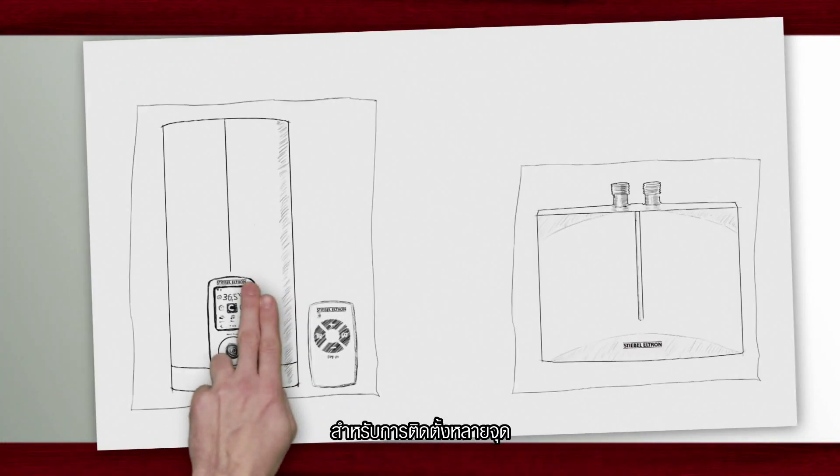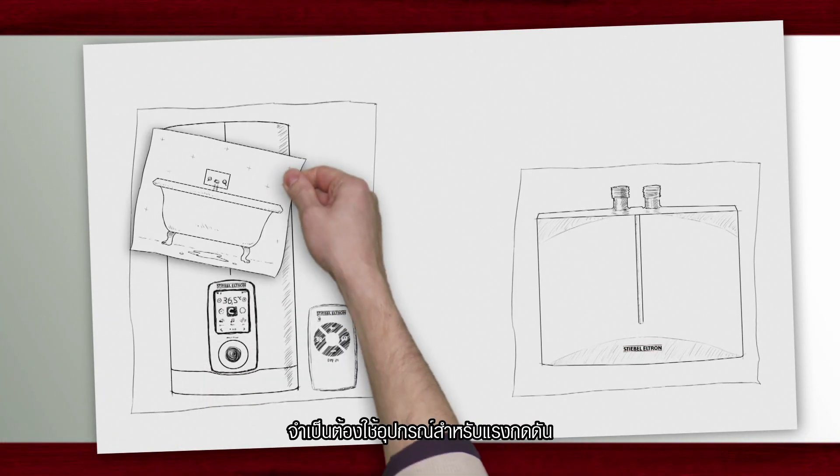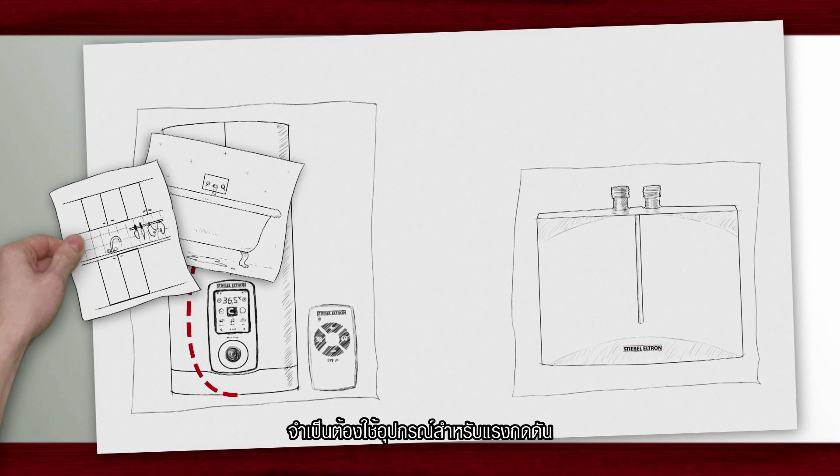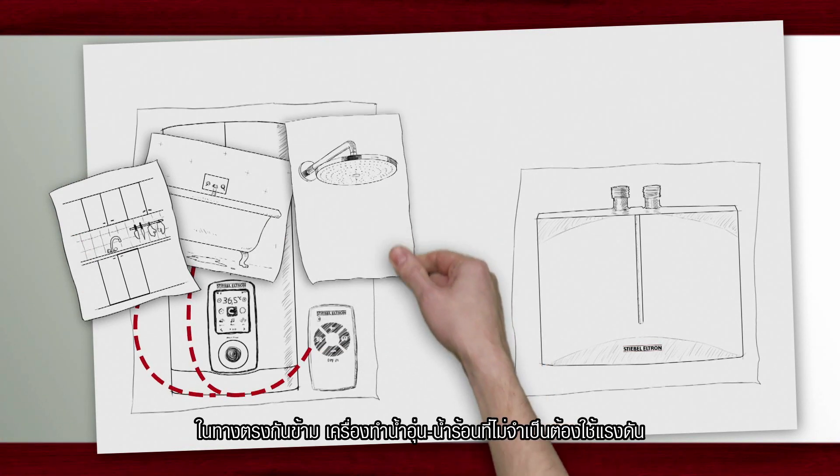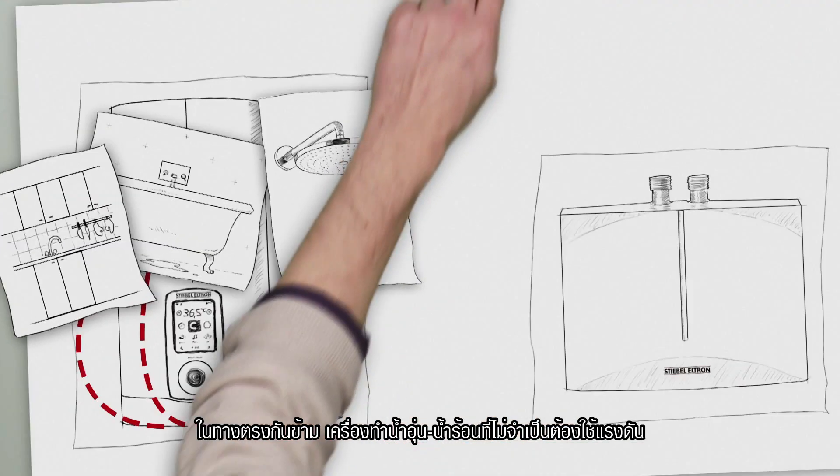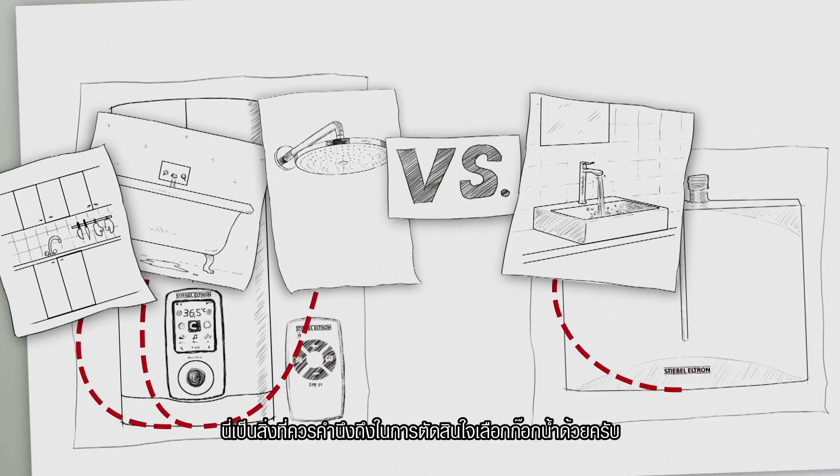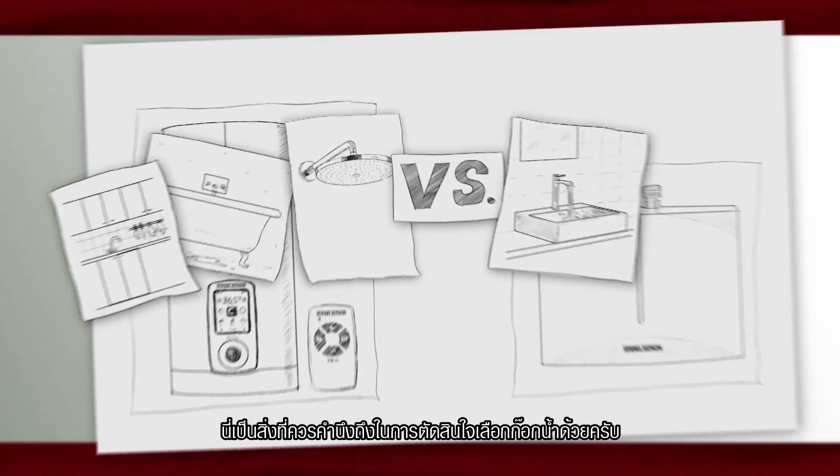For an installation with several draw-off points we need an appliance suitable for mains pressure. Non-pressurized water heaters on the other hand are suitable for a single draw-off point. It's important to select the right kind of tap for the two different systems.